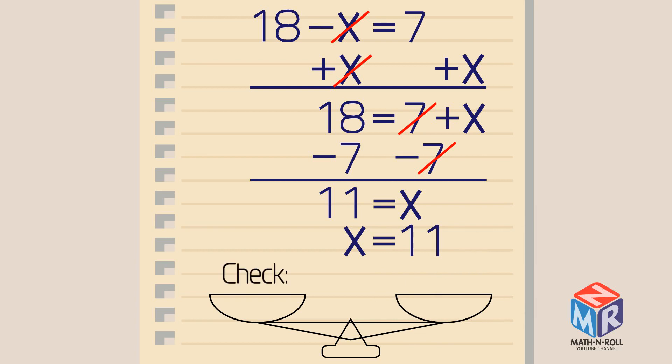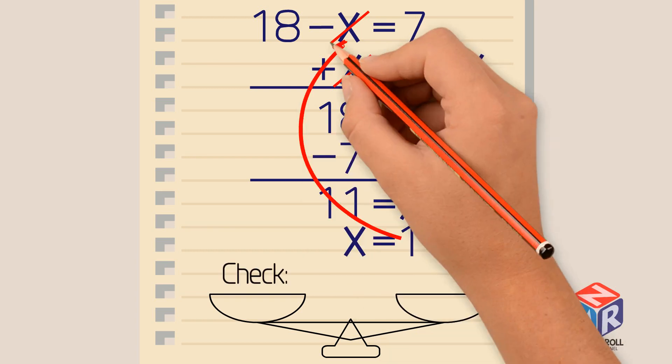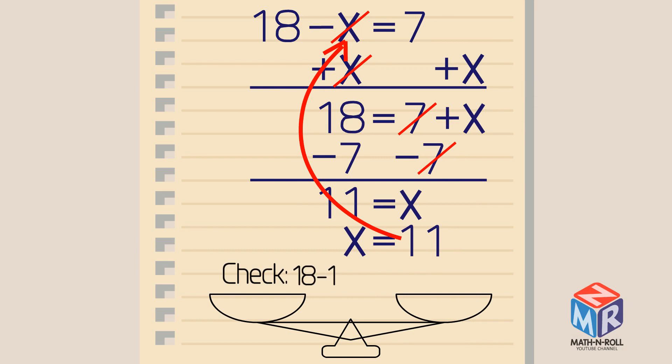Let's check it. Plug in 11 into x. 18 minus 11 equals 7, so we are correct.